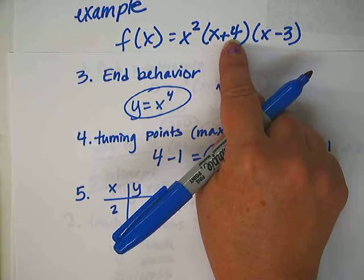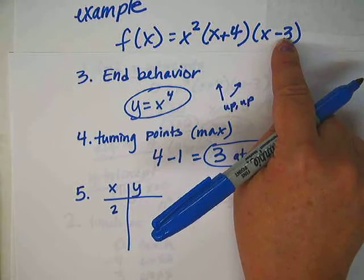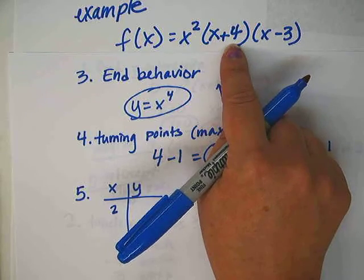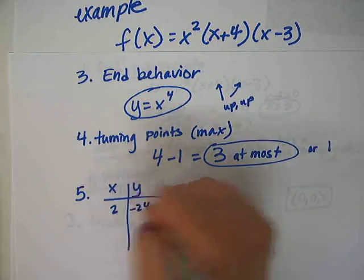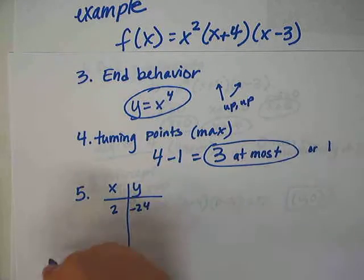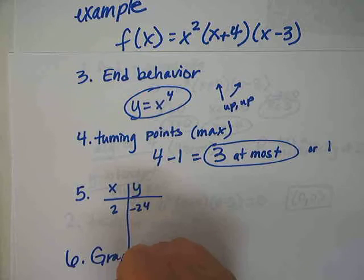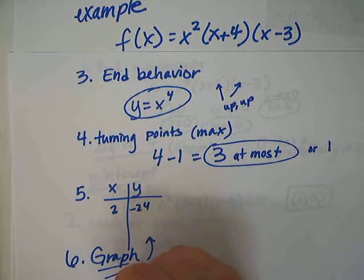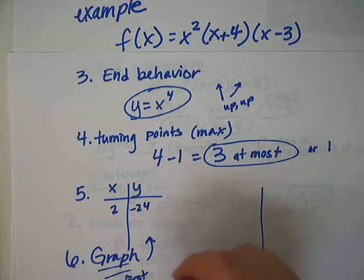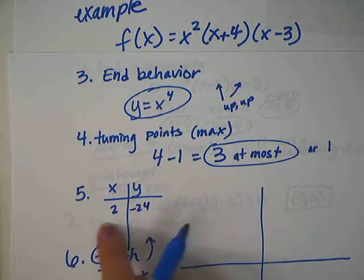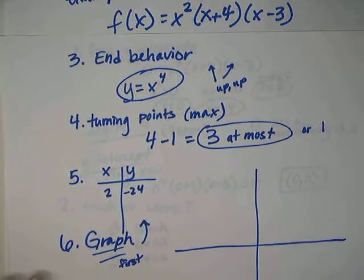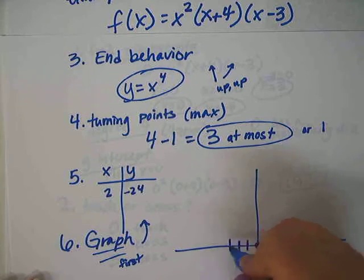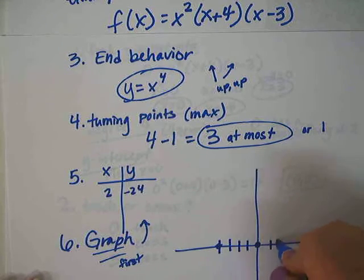For example, x equals 2: 2 squared is 4, 2 plus 4 is 6, and 2 minus 3 is negative 1. So 4 times 6 is 24 times negative 1 is negative 24. That's probably going to go off the graph. I find it easiest to start graphing first before doing this, then put everything in that you know and pick additional points for what you don't know.